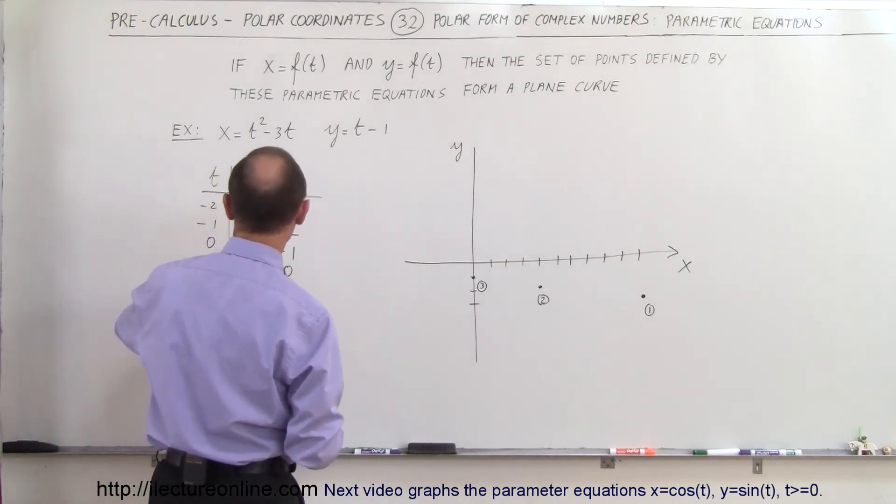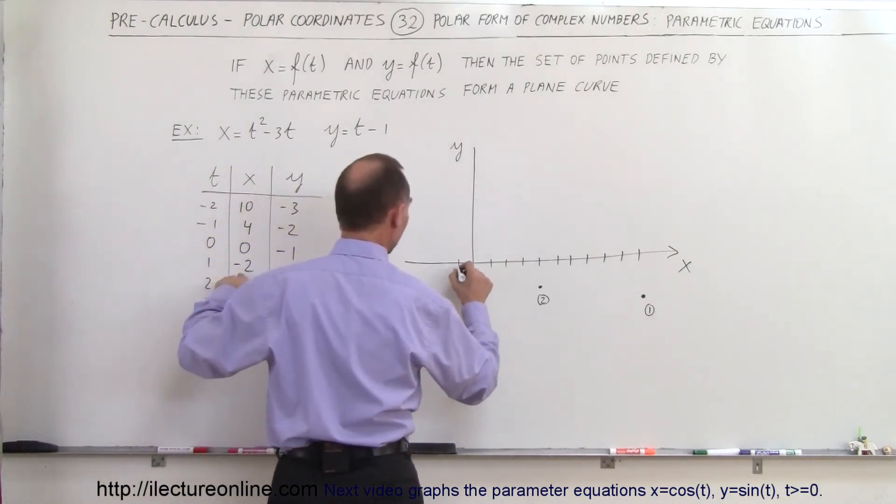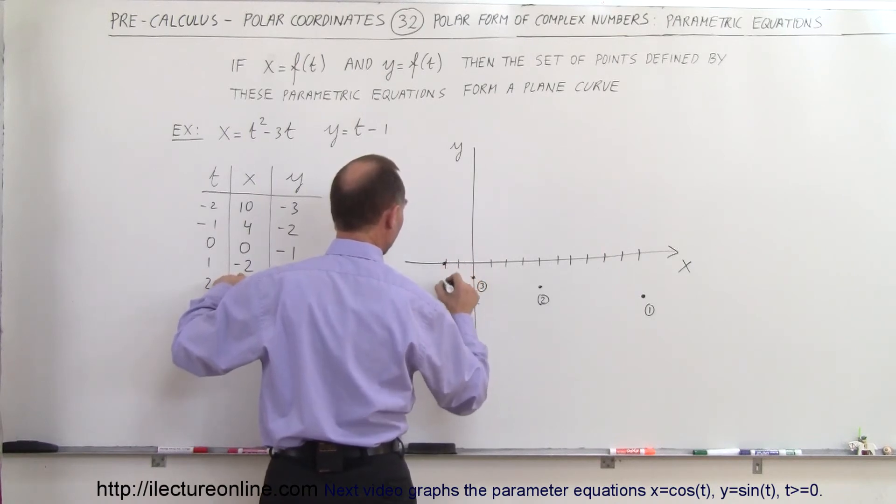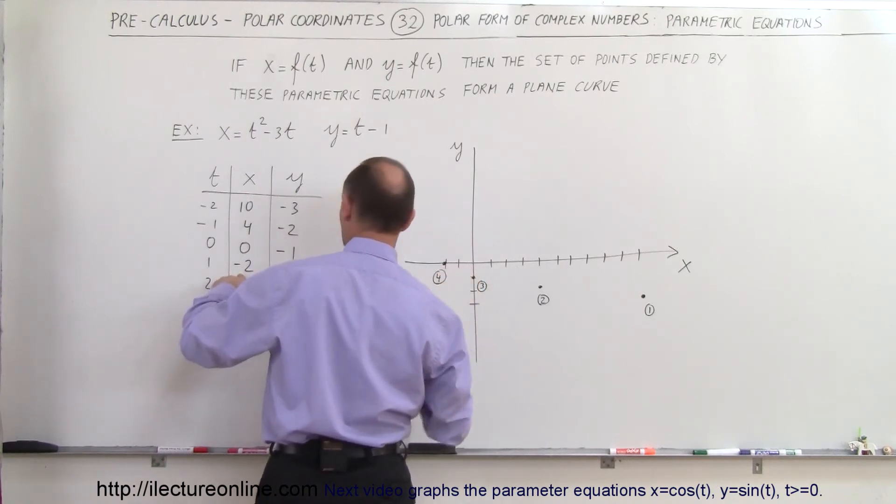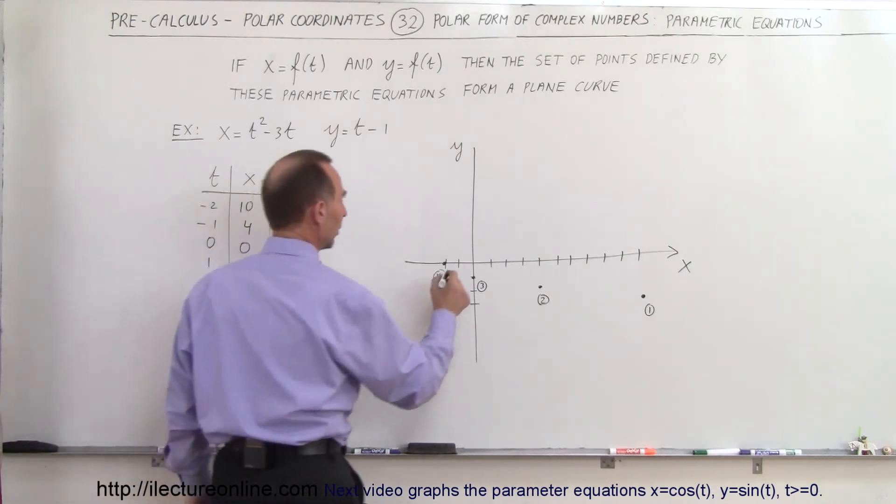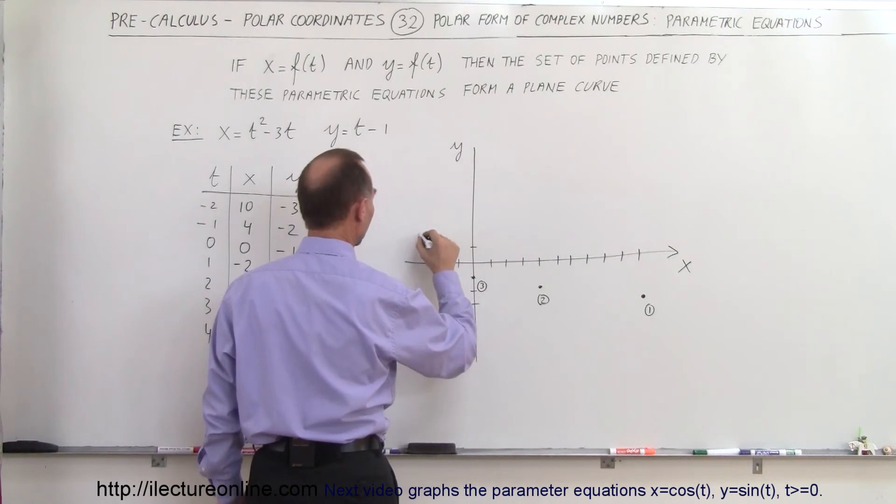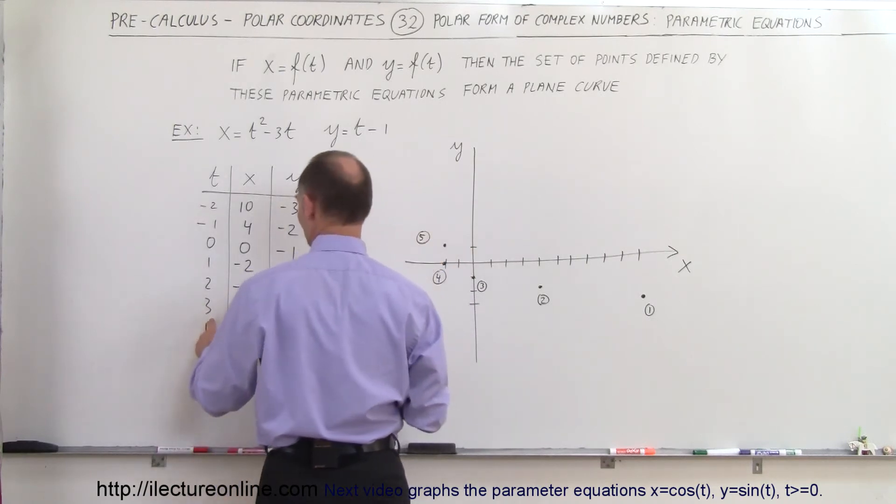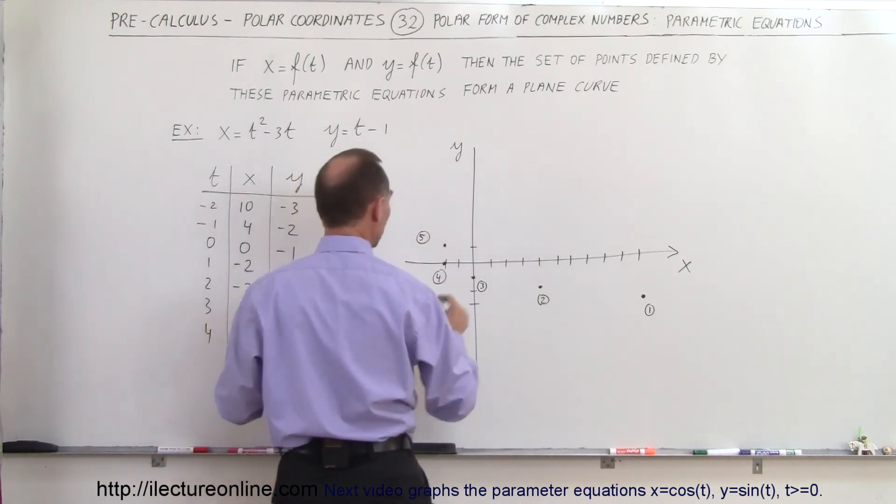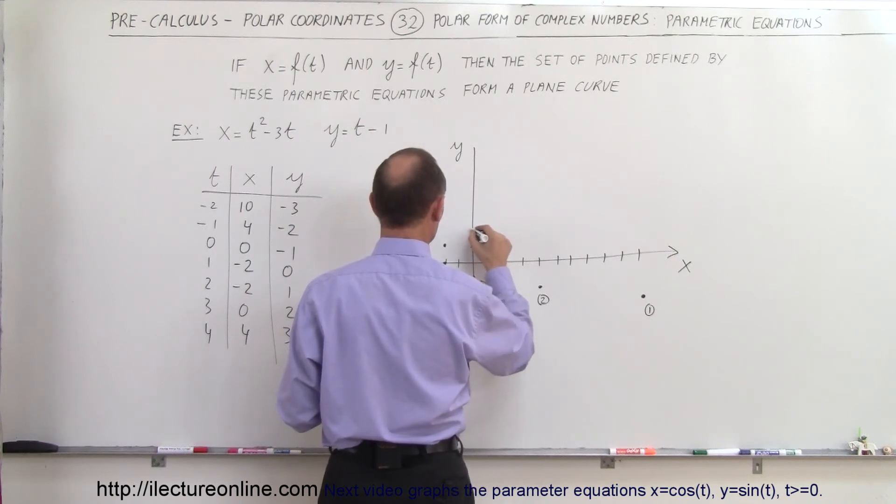So point number 4 would be (-2, 0). That would be that point right there. The next point would be at (-2, 1). That would be this point right there, point number 5. Next point would be (0, 2). That would be this point right there, point number 6.